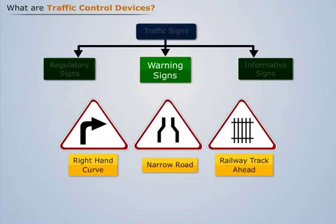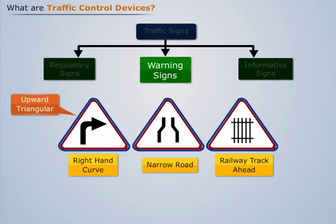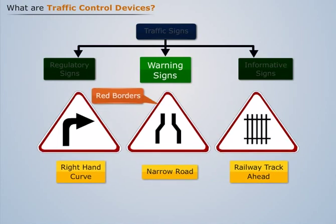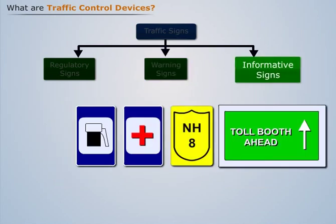Warning signs are the cautionary signs which are for the safety of the person driving the vehicle. The shape used for these signs is upward triangular or diamond shape with red borders, and the color convention is the black legend with white background. Informative signs are used to provide information to the driver about the facilities available on the route at specific destinations. They have distinctive and unique designs.